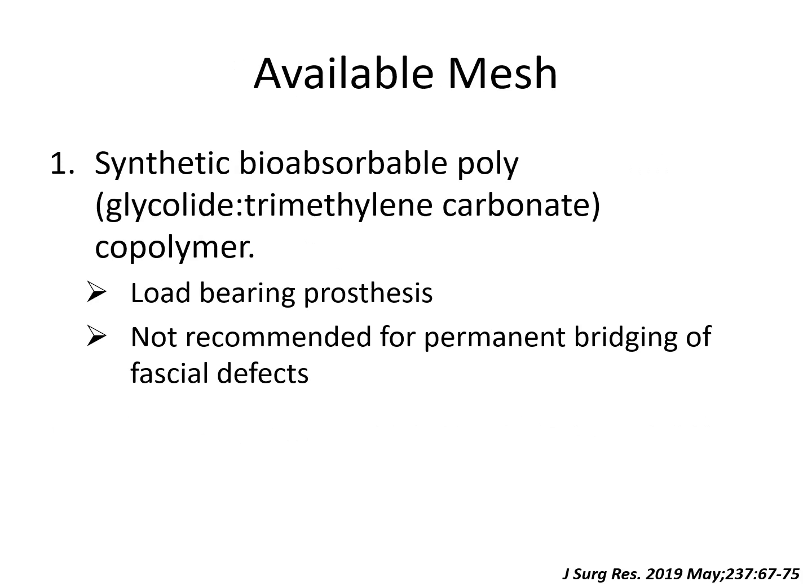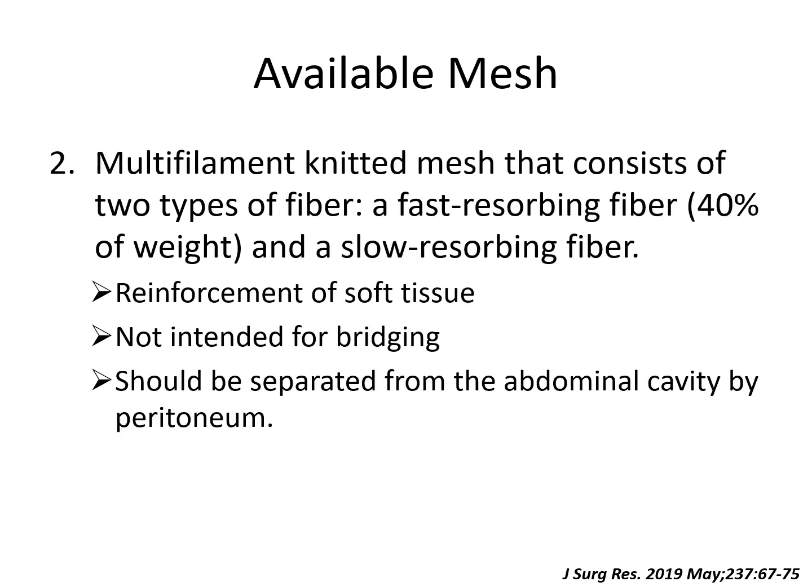At present, there are three commercially available mesh products that fall into the synthetic resorbable category. The first is a synthetic biabsorbable copolymer made from glycolide and trimethylene carbonate. This is meant to be a load-bearing prosthesis and is not recommended for permanent bridging or for fascial defects. The second is a multifilament knotted mesh consisting of two types of fibers — a fast-resorbing fiber and a slower-resorbing fiber. It is meant to reinforce soft tissue, is not intended to bridge defects, and should be separated from the abdominal cavity by the peritoneum. These should not be placed in an intraperitoneal or IPOM fashion.